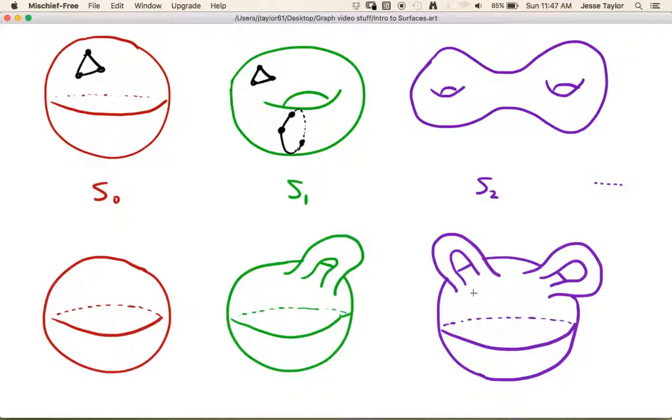And essentially these little handles are playing the roles that these holes play, right? There's a hole going through the handle, there's a hole going through the donut, right, the torus. There's two holes, one in each handle, and now there's two holes, one for each of these. So we can essentially think about doing this by adding handles. So this is what we mean when we talk about surfaces - these are orientable surfaces.